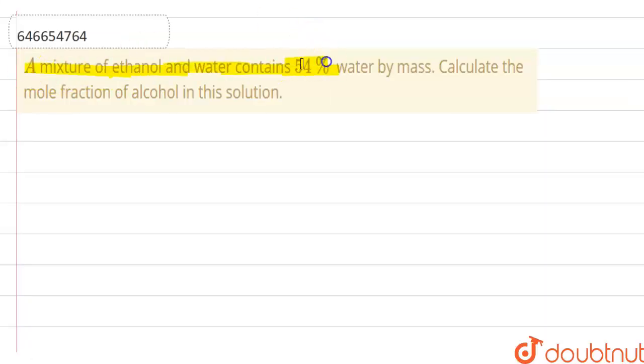A mixture of ethanol and water contains 54% water by mass. Calculate the mole fraction of alcohol in the solution.